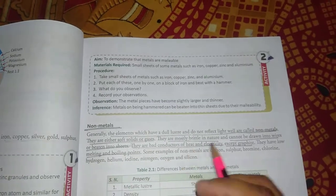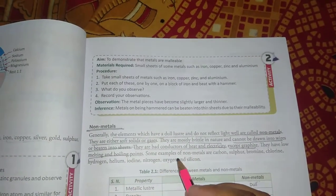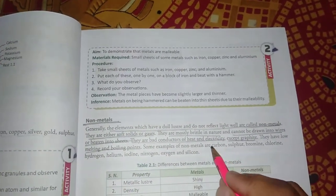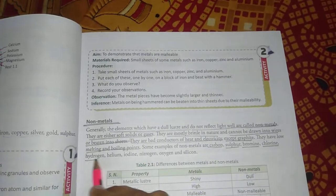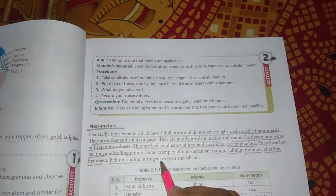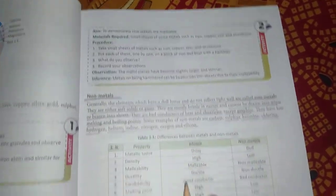Examples of non-metals include carbon, sulfur, bromine, chlorine, hydrogen, helium, iodine, nitrogen, oxygen, and silicon.